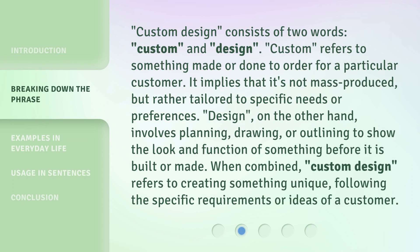Custom Design consists of two words: custom and design. Custom refers to something made or done to order for a particular customer. It implies that it's not mass-produced, but rather tailored to specific needs or preferences. Design, on the other hand, involves planning, drawing, or outlining to show the look and function of something before it is built or made. When combined, custom design refers to creating something unique, following the specific requirements or ideas of a customer.